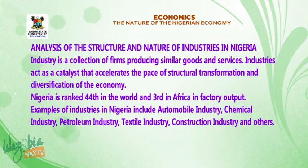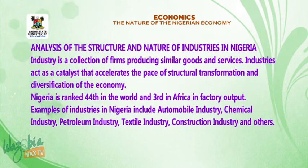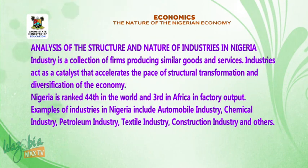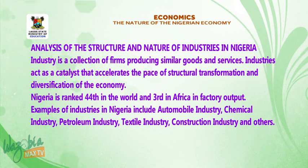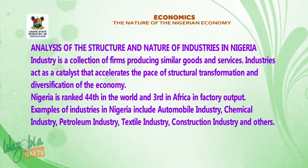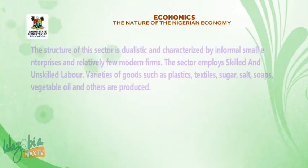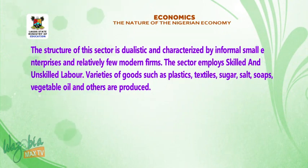Analysis of the structure and nature of industries in Nigeria. An industry is a collection of firms producing similar goods and services. Industries act as a catalyst that accelerates the pace of structural transformation and diversification of the economy. Nigeria is ranked 44th in the world and 3rd in Africa in factory outputs. Examples of industries in Nigeria include automobile industry, chemical industry, petroleum industry, textile industry, and construction industry. The structure of this sector is dualistic, characterized by informal small enterprises and relatively few modern firms.